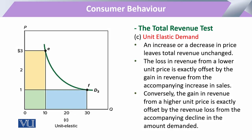When there is unit elasticity, whatever change occurs in price is responded to equally by the change in quantity demanded. Either an increase or a decrease in price leaves the total revenue unchanged, because the change in price is totally offset by the change in quantity demanded.